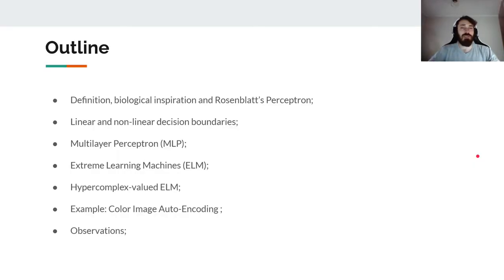The idea with this talk is that I can give a brief overview of the definition, biological inspiration and the early days of artificial neural networks. I can introduce two very well-known models in the literature, the Multi-Layer Perceptron and the Extreme Learning Machine, and then proceed to introduce the topic that I research in my PhD which is the hypercomplex valued models, in this case a hypercomplex valued extreme learning machine alongside with the color image auto encoding task that we presented in our World Conference on Computational Intelligence paper.